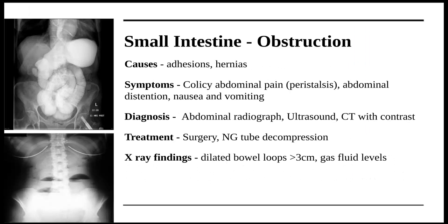X-ray findings in small intestine obstruction are dilated bowel loops — as seen in the first diagram, the circumference has increased to more than three centimeters. You can also see gas-fluid levels in the second diagram. Gas-fluid levels occur because during an obstruction, both fluid and gas accumulate in the intestines. Since gas has lower density, it forms an upper layer while fluid forms the lower layer, as shown in the diagram.